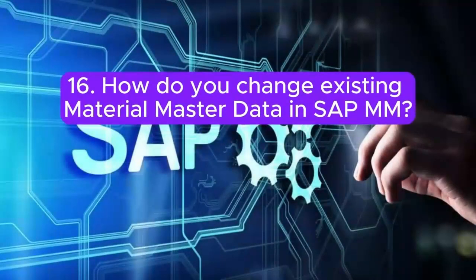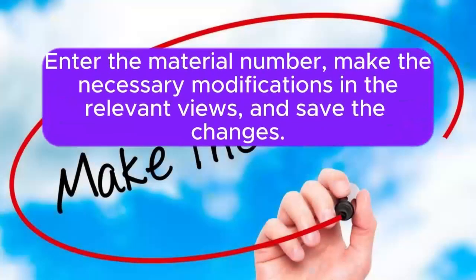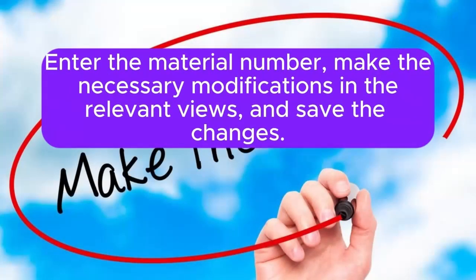Question 16: How do you change existing Material Master data in SAP MM? To change existing Material Master data, use the transaction code MM02 (change material). Enter the material number, make the necessary modifications in the relevant views, and save the changes.